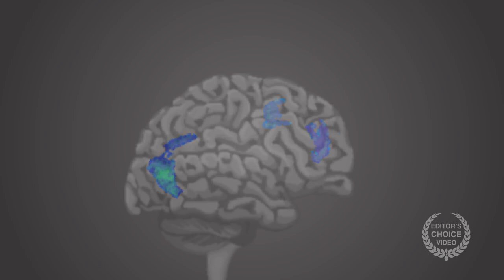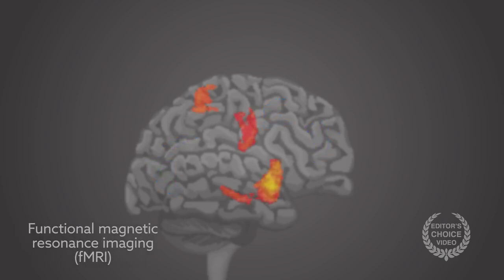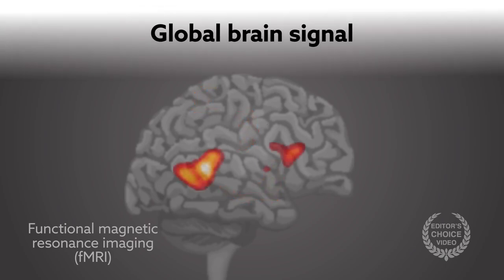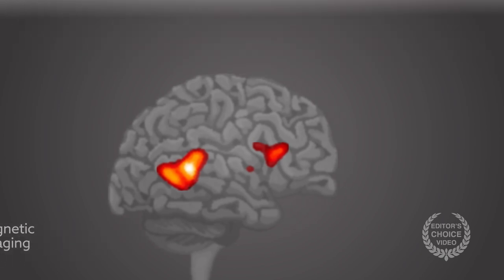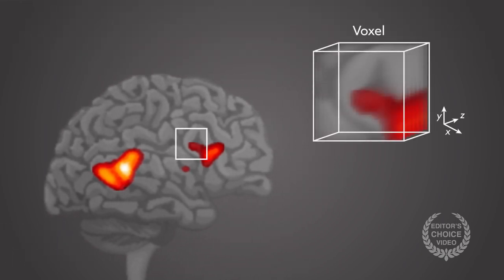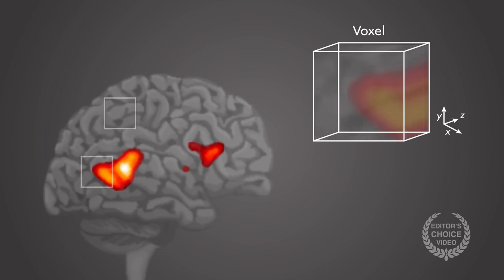A group of international researchers examined functional magnetic resonance imaging, or fMRI data, and found support for the use of something called the global brain signal. The global signal is an average of all gray matter brain activity across each voxel in a scan and reflects global coordination at a given time.